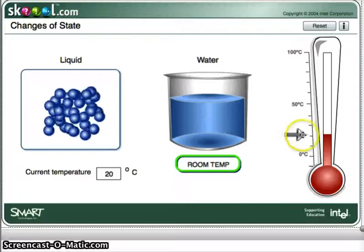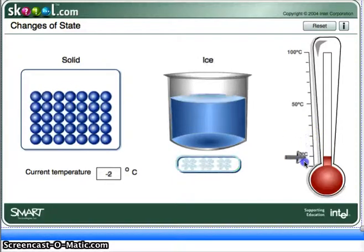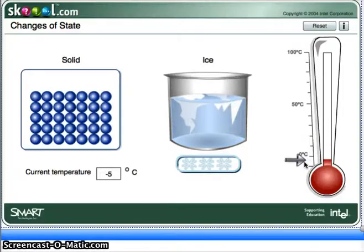If we were to decrease the energy by lowering the temperature, we can take that water and form it into a crystal structure, and we can slow the molecules down to the point that they have very little energy, and when they have very little energy, they have very little motion.